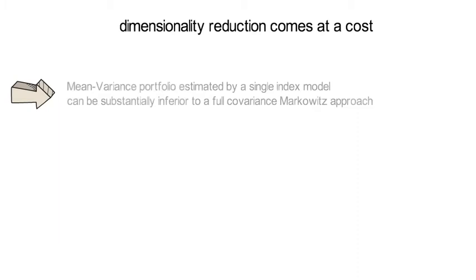As expected, a dimensionality reduction of that size comes potentially at a cost. The mean-variance portfolio with mu hat and sigma hat being estimated by a single index model can be substantially inferior to a full covariance and expected return estimate using sample data.